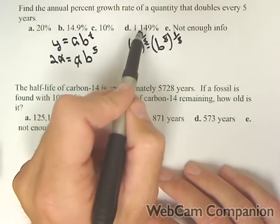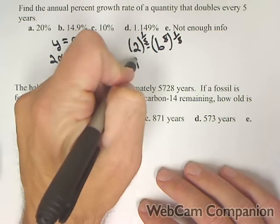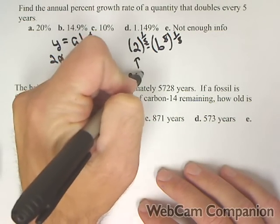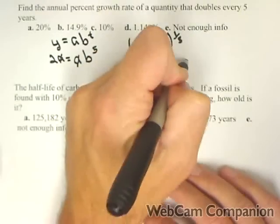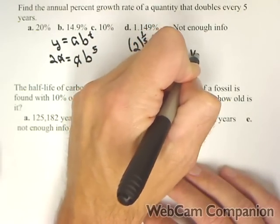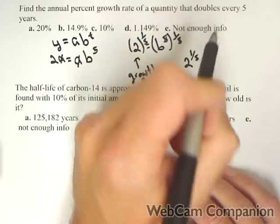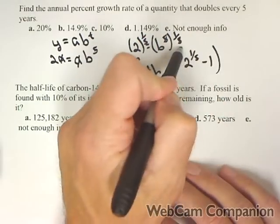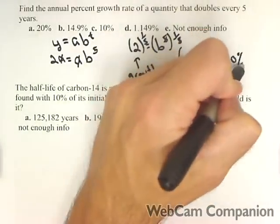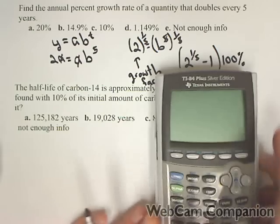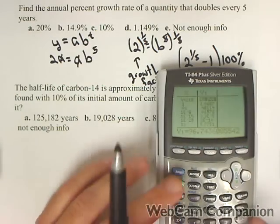Now, to get your annual rate, this is your growth factor. And so to get a growth rate from a growth factor, it's always your growth factor. So 2^(1/5) - 1, and then we'll turn it into a percent by multiplying by 100. It's always the case. That's why it's so important to identify your growth factor.